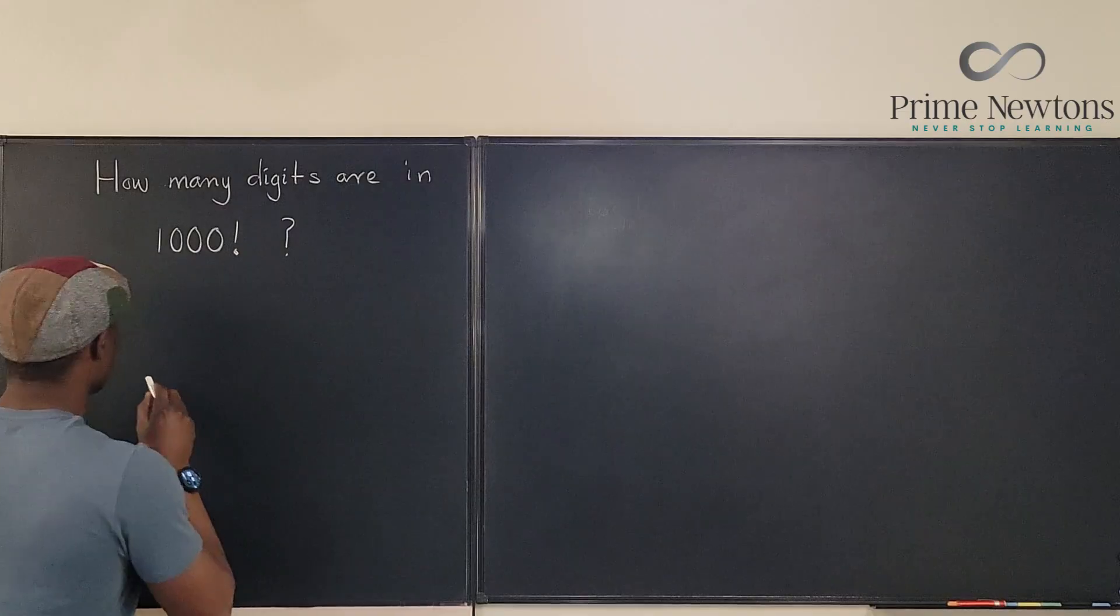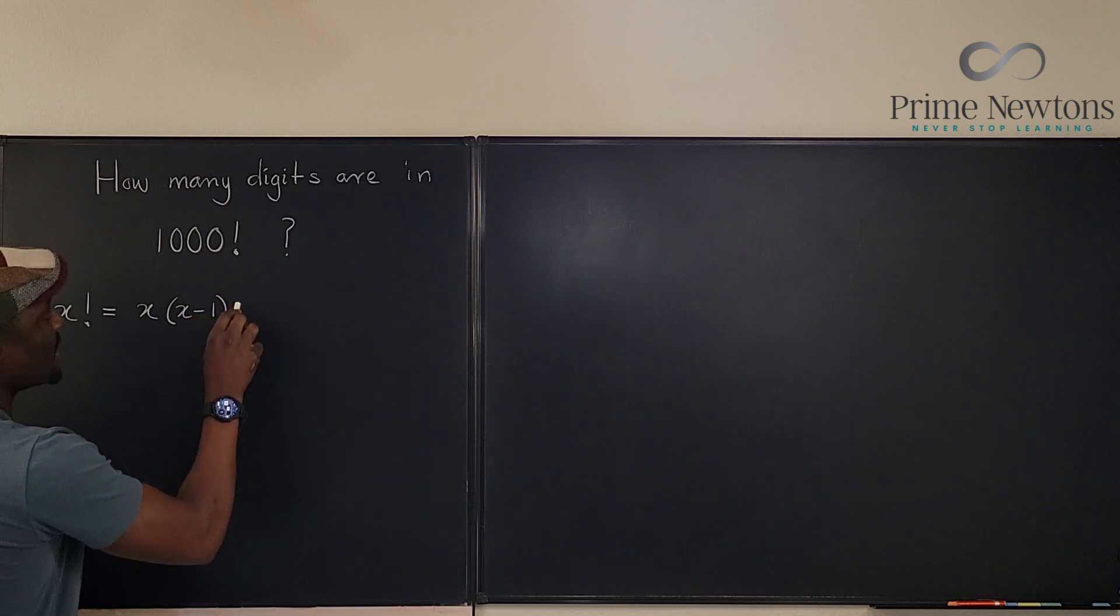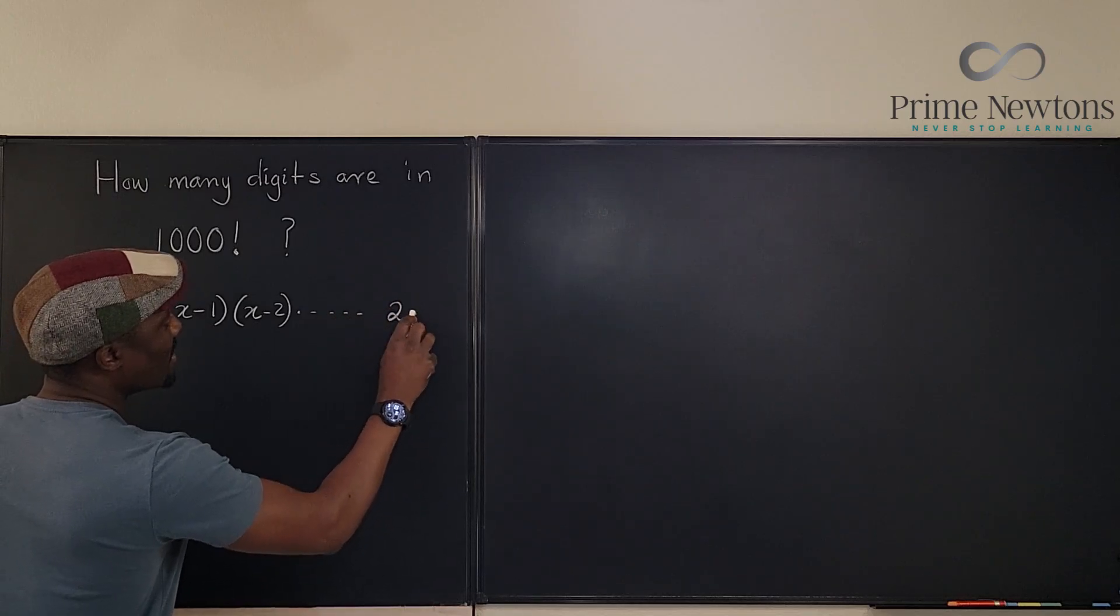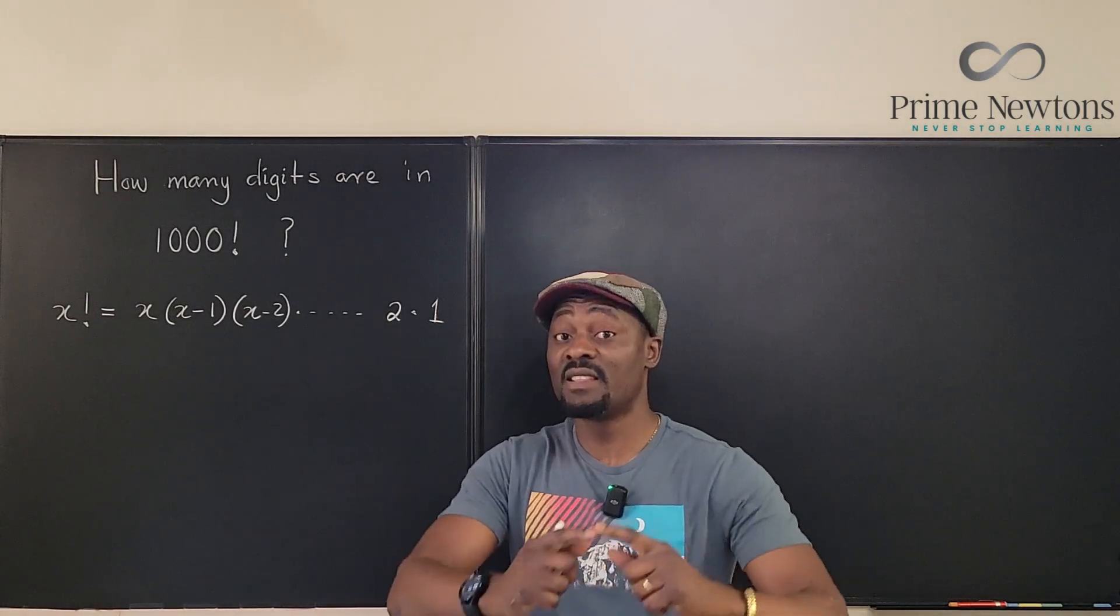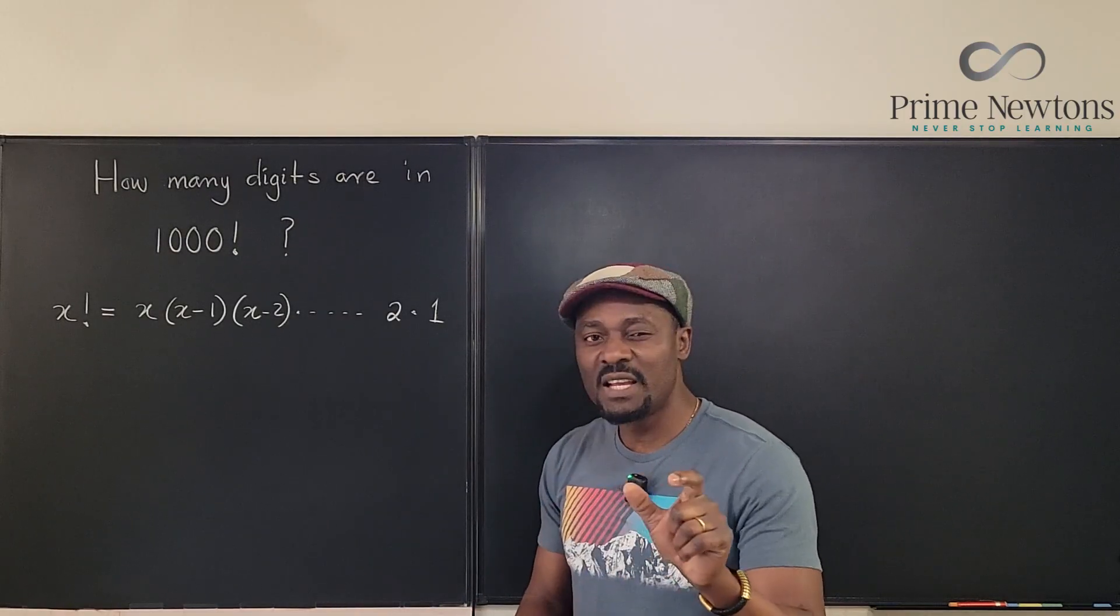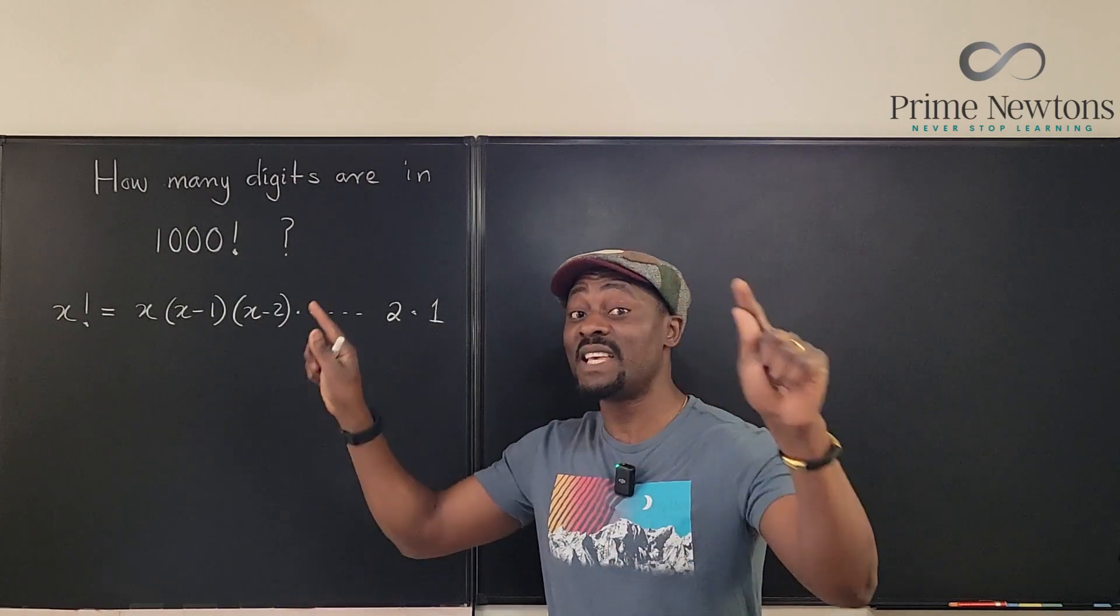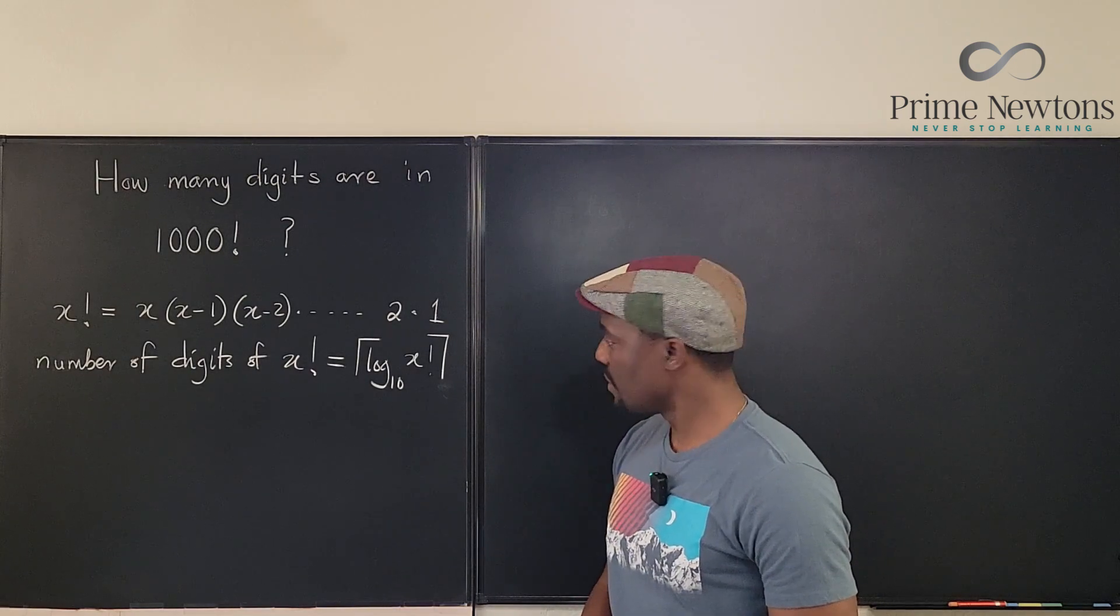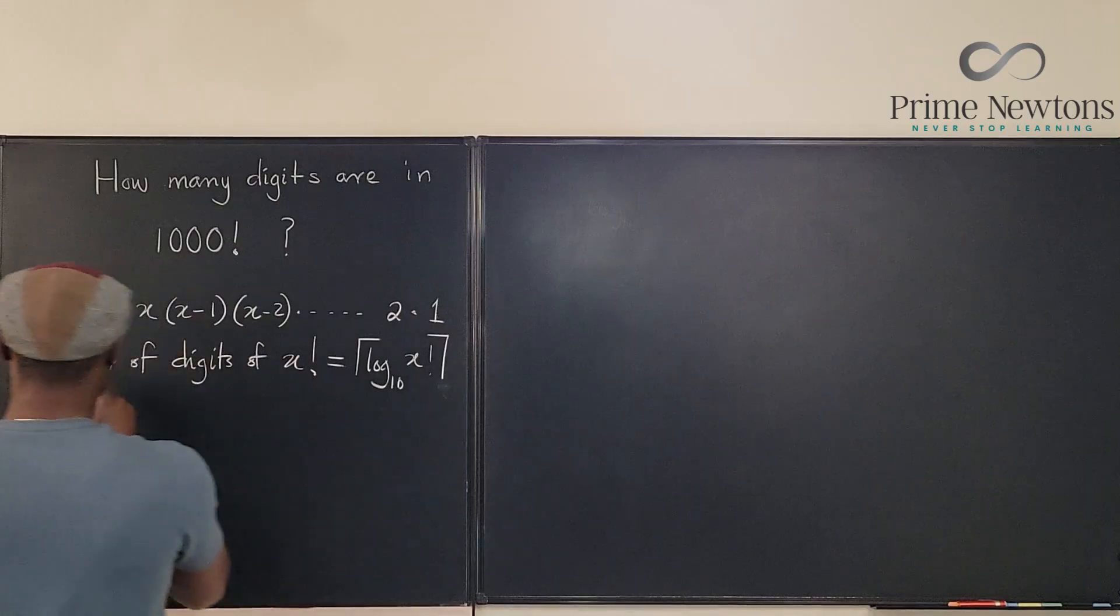I'm going to define the factorial as x factorial is equal to x times x minus 1 times x minus 2. It's going to keep going until I get to 2 times 1. That's my definition of the factorial because now I'm thinking of the pi function that is continuous. And because I said we don't know what we're going to do, we're going to assume that if we take the log base 10 of what we have here, we're going to get our answer, the number of digits by taking the ceiling. That's it. Let's box this. The number of digits we're looking for is the ceiling of x factorial.